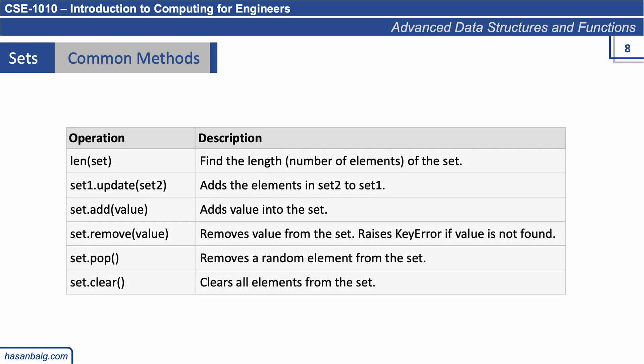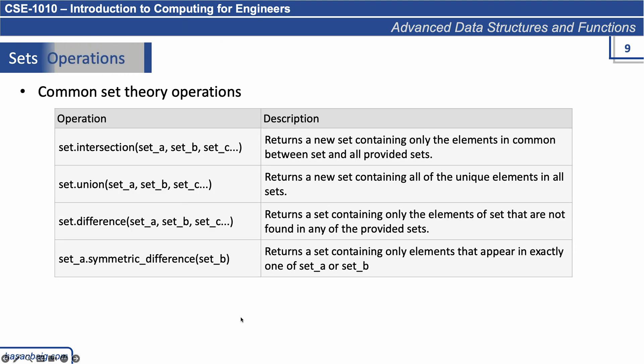There are some common methods that we can run on sets, just like on lists or tuples. We can check the length of the set, merge two sets together with the update method. It adds the elements of set2 to set1, only adding those elements which are not already present in set1. We've already seen add, remove, pop, and clear - clear flushes out all the contents of a set.